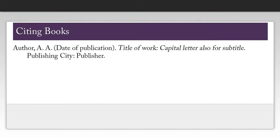When citing a book, you need to find the following information: the name of the author, the date of publication, the title of the book, the publisher, and the publishing city. One thing to note is the capitalization on the title of the book — you're only going to capitalize the first word of the title and the first word of the subtitle, as well as any proper nouns.